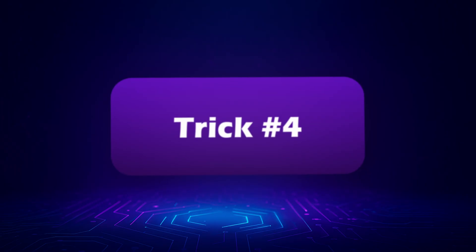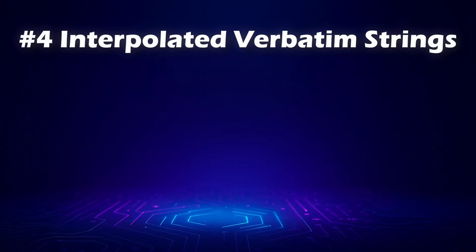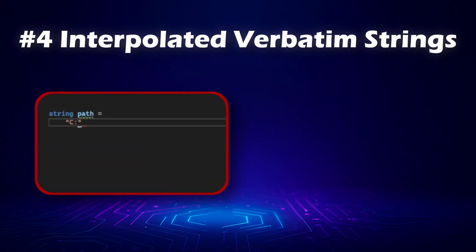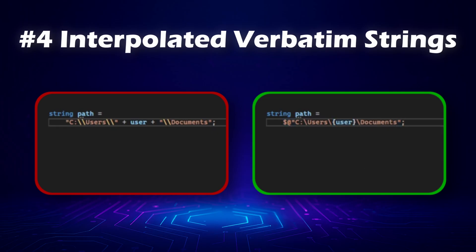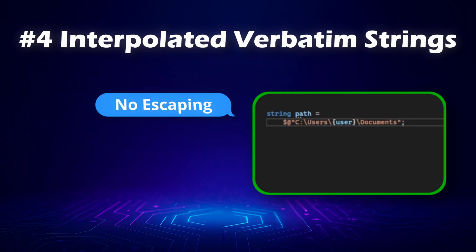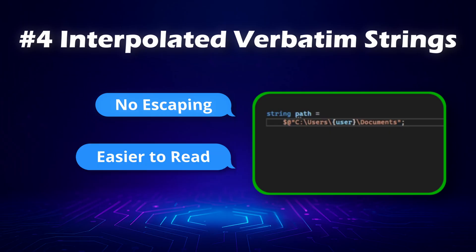Let's move on to the next trick: interpolated verbatim strings. This was made to make working with file paths and text much easier. Here's the old way without this feature — it works, but notice how you have to escape every single backslash; it's messy and harder to read. Here's the cleaner version with an interpolated verbatim string. You don't have to escape backslashes anymore — you can write them exactly as they are, which makes paths much easier to handle. The string in your code looks almost identical to the actual file path, so it's instantly clear what it represents.